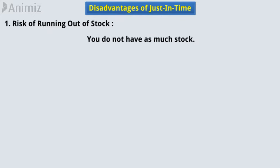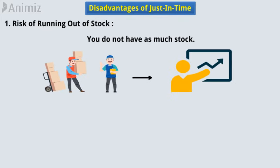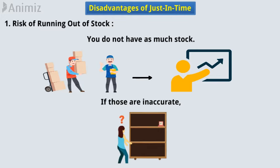Let's discuss some disadvantages of Just-in-Time. 1. Risk of running out of stock. With Just-in-Time manufacturing, you do not have as much stock. This is because you base your stock on demand projections, and if those are inaccurate, then you will not have the proper amount of stock readily available for your consumers.